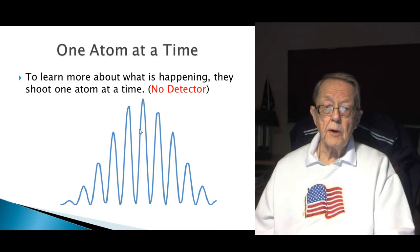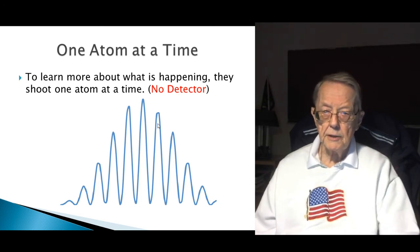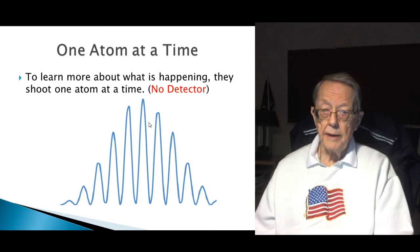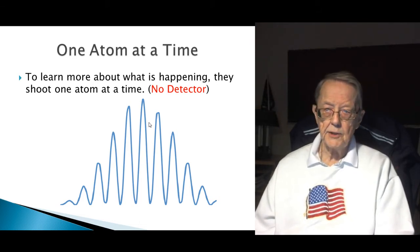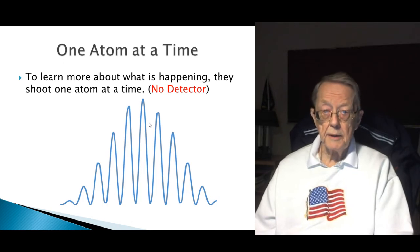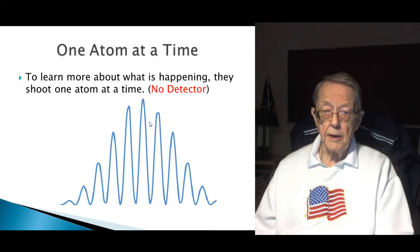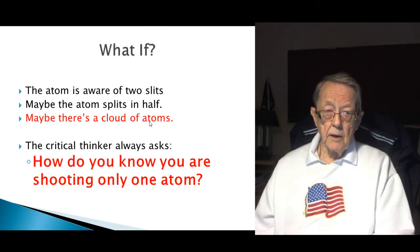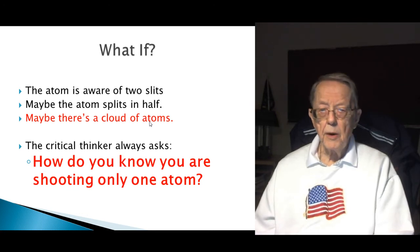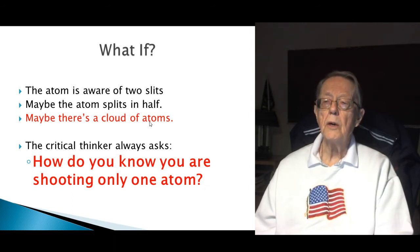So they decide that they're going to learn more about what's happening. They shoot one atom at a time. I emphasize here, no detector, because later on the detector comes into play. They shoot one atom at a time. They get the same thing. So it isn't - now, before it was streams of atoms. Well, now it's one atom at a time. They get the same thing. Somehow the atom knows there's a double slit or whatever. Not really any good explanation. Well, and I've already covered this. What if the atom was aware that there's two slits? Maybe the atom splits in half. Maybe there's a cloud of atoms. But as a critical thinker, how do you know you are shooting only one atom?